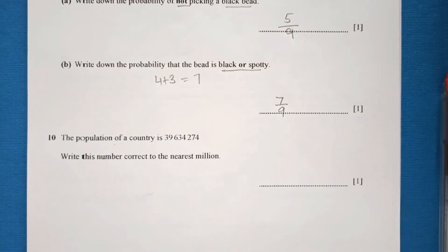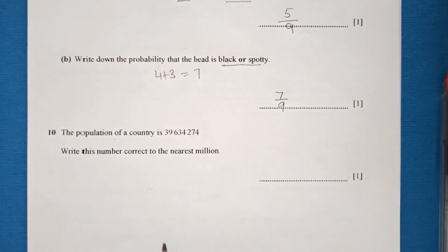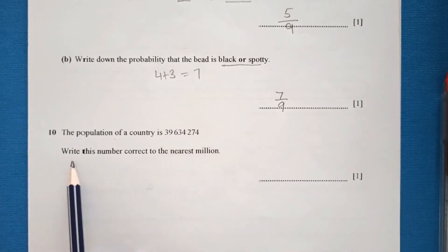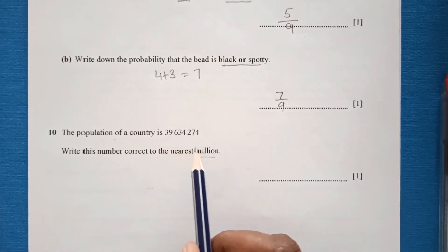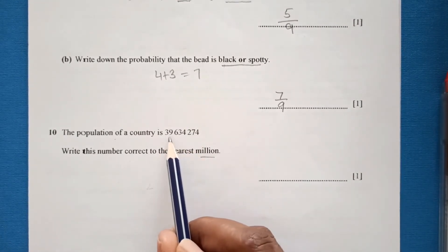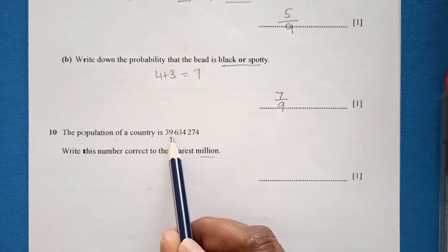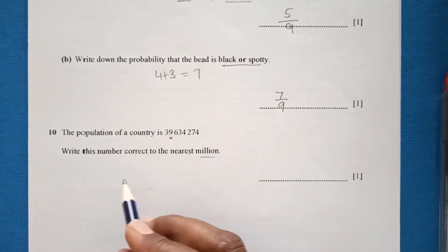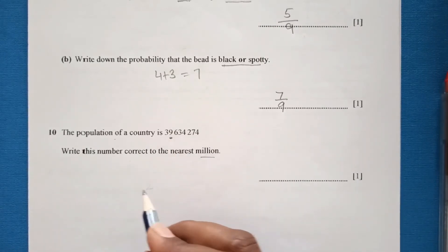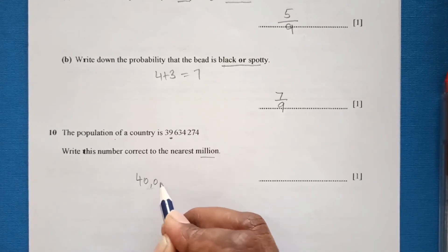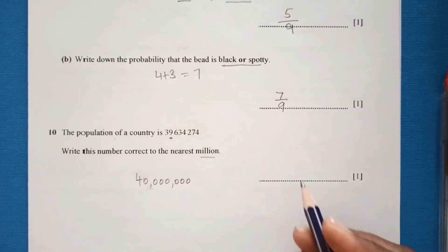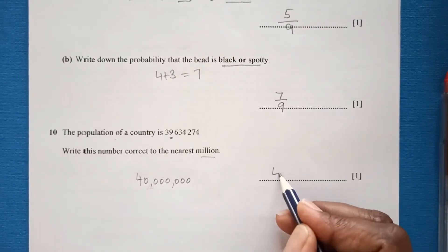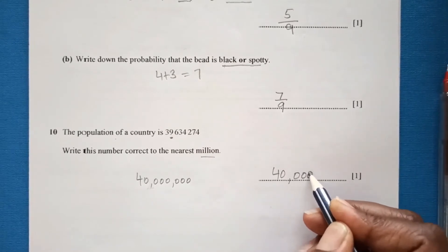Question 10: the population of a country is given. Write this number correct to the nearest million. This is the millions place; when you round it, the answer is 4 million. That is our final answer.